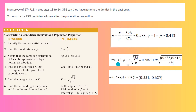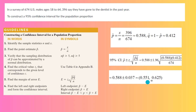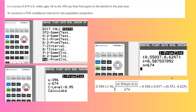The 95% confidence interval is p-hat plus or minus zc, the critical value, times the square root of p-hat times q-hat divided by n. p-hat is 0.588 plus or minus. The critical value for the 95% level of confidence is 1.96, and here you have the square root of 0.588 times 0.412 divided by 674. When we simplify this, we get the lower bound as 0.551 or 55.10% and the upper bound as 0.625 or 62.50%.